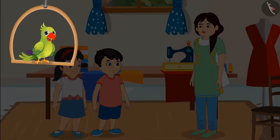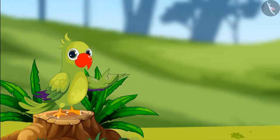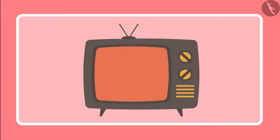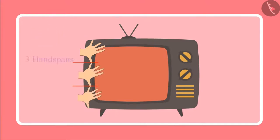So did you see children, to know the length of the object, we measure them. In this video, we measured objects using hand spans. Just like the width of this TV — it's one, two, three — three hand spans wide.